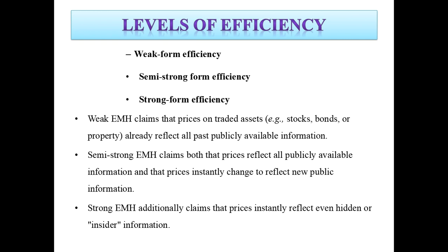Let's look at the levels of efficiency. First is the weak form efficiency, then the semi-strong form efficiency. Weak form EMH claims that prices on traded assets like stocks, bonds, or property already reflect all past publicly available information. Semi-strong EMH claims that prices reflect all publicly available information and that prices instantly change to reflect new public information. Strong EMH additionally claims that prices instantly reflect even hidden or insider information.